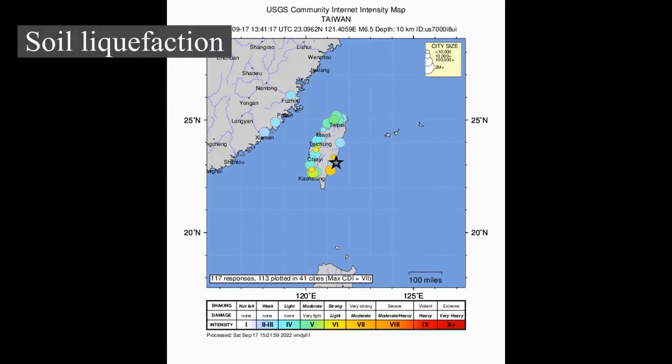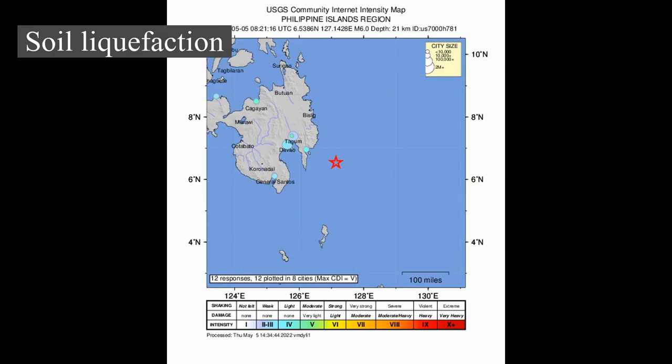Soil liquefaction occurs when water-saturated granular material such as sand temporarily loses its strength due to shaking and transforms from a solid to a liquid. Soil liquefaction may cause rigid structures like buildings and bridges to tilt or sink into the liquefied deposits. For example, in the 1964 Alaska earthquake, soil liquefaction caused many buildings to sink into the ground, eventually collapsing upon themselves.